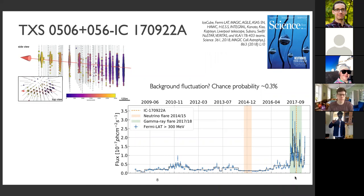A few months before the arrival of the neutrino — shown with the orange dashed line — the source had started undergoing its most major flare seen in 10 years of Fermi observations. The chance probability to see such a neutrino of such energy associated with a blazer with gamma ray flux as high or higher is 0.3% — a three-sigma effect. This was the first source to be associated with an IceCube neutrino at such high significance.